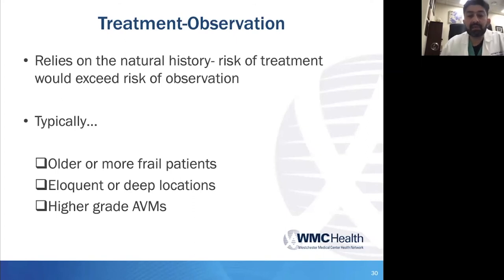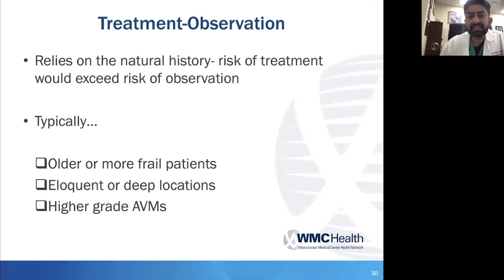Turning to observation — observation goes back to the concepts of natural history, where the risk of treatment may exceed the risk of natural history in certain situations. Typically, observation would be favored for older or more frail patients, AVMs located in highly eloquent or deep locations, and certainly higher-grade AVMs.